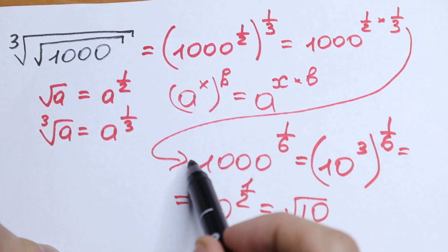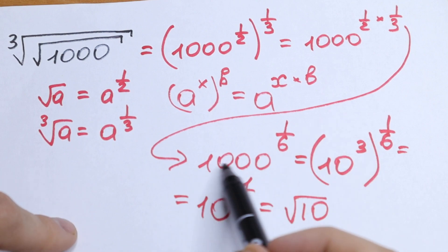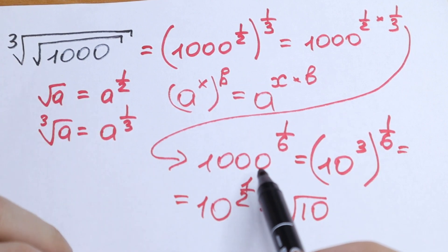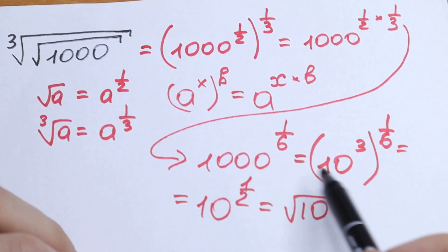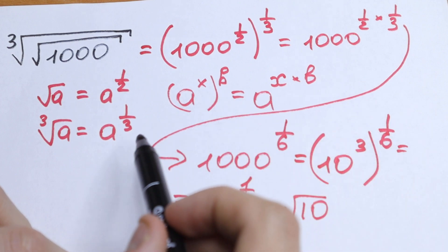Of course we can rewrite it as 6th root of 1000 and express this 1000 as 10 times 100, but it's faster to write this 1000 as 10 cubed raised to the power 1/6 and use this rule once more.